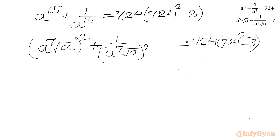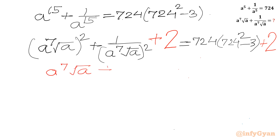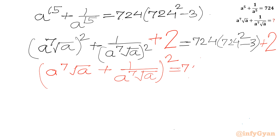Now adding 2 to both sides, and using the identity a² + b² + 2ab = (a+b)², the left-hand side becomes (a^7·√a + 1/(a^7·√a))², which is E². The right-hand side becomes 724·(724² − 3) + 2.